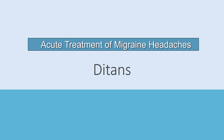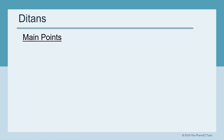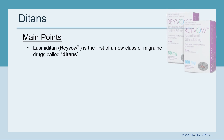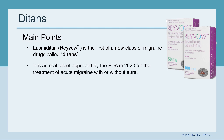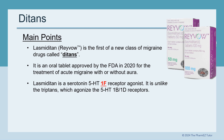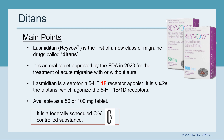Now let's talk about the DITANs. Lasmiditan, or Reyvow, is the first of a new class of migraine drugs called DITANs. It's an oral tablet approved by the FDA in 2020 for the treatment of acute migraine with or without aura. Lasmiditan is a serotonin 5-HT1F receptor agonist — unlike the triptans, which agonize the 5-HT1B and 5-HT1D receptors. It's available as a 50 or 100 mg tablet and is a federally scheduled C5 controlled substance.